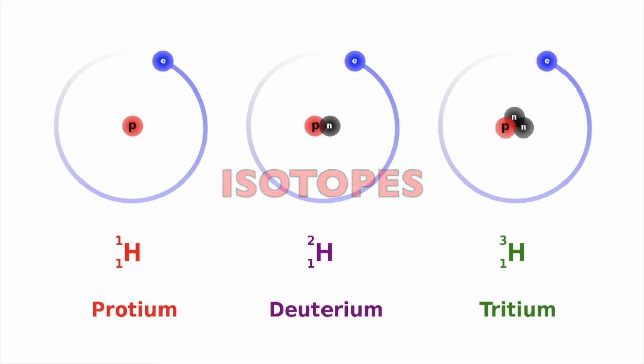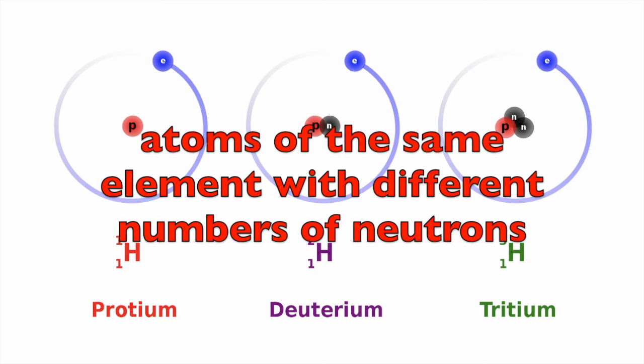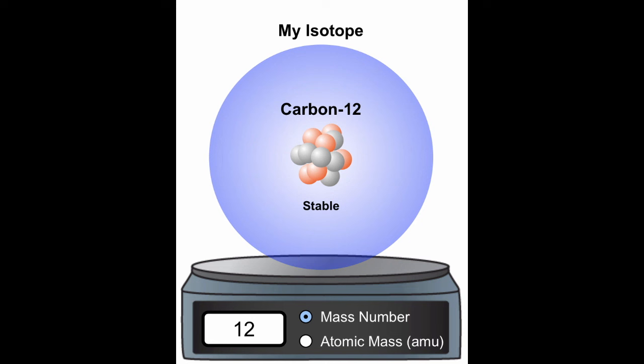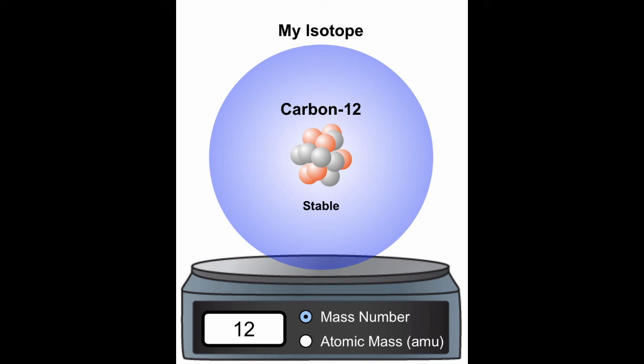Remember, isotopes are atoms of the same element with different numbers of neutrons. Some isotopes are more common in nature than others. For example, a single chunk of carbon could have some carbon-12 in it with 6 protons and 6 neutrons. It might also have a little bit of carbon-13 with 6 protons and 7 neutrons, and maybe a tiny amount of carbon-14, which has 6 protons and 8 neutrons. Carbon-12 is the most abundant isotope.